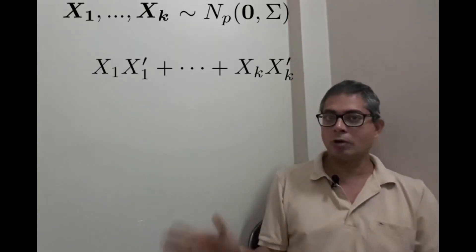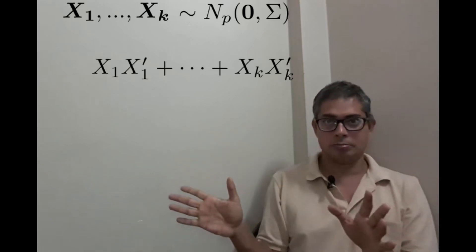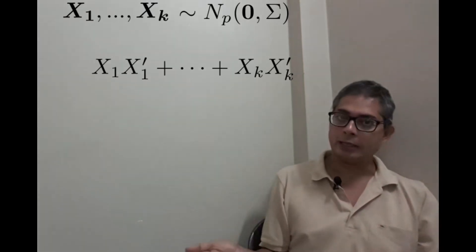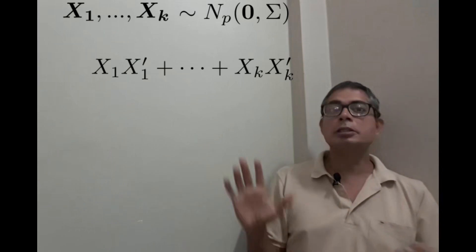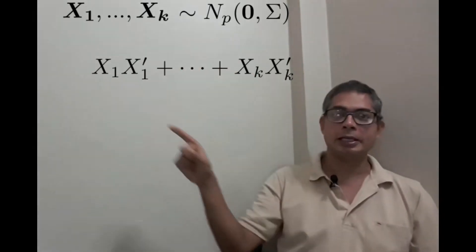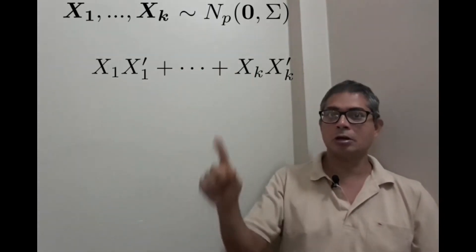Now matrix or whatever, it is a random variable, and every random variable has a distribution. The distribution of these things clearly depends on p, k, and this Σ.